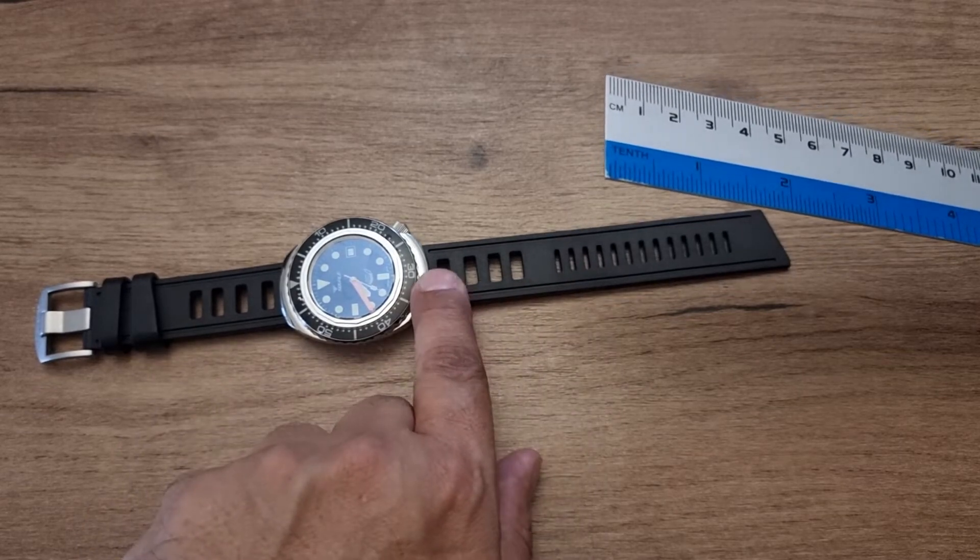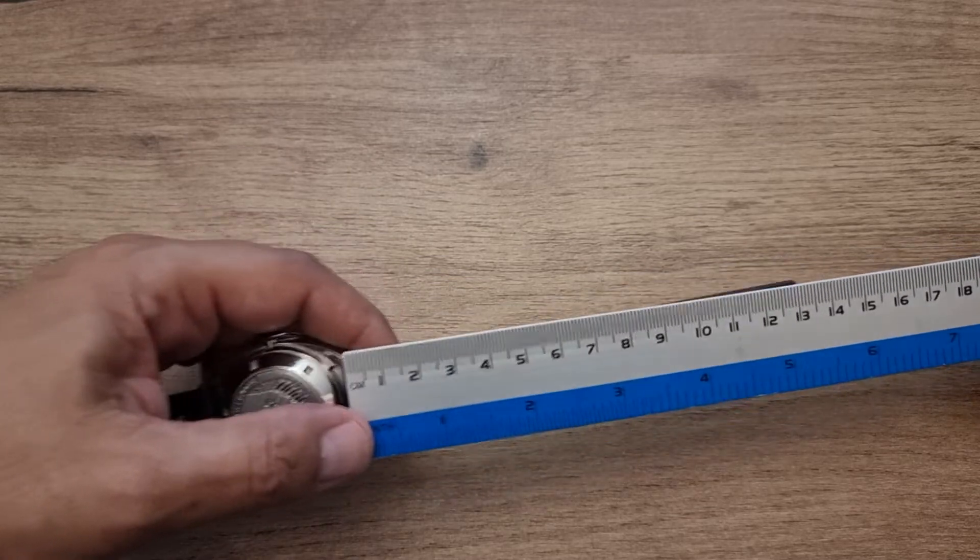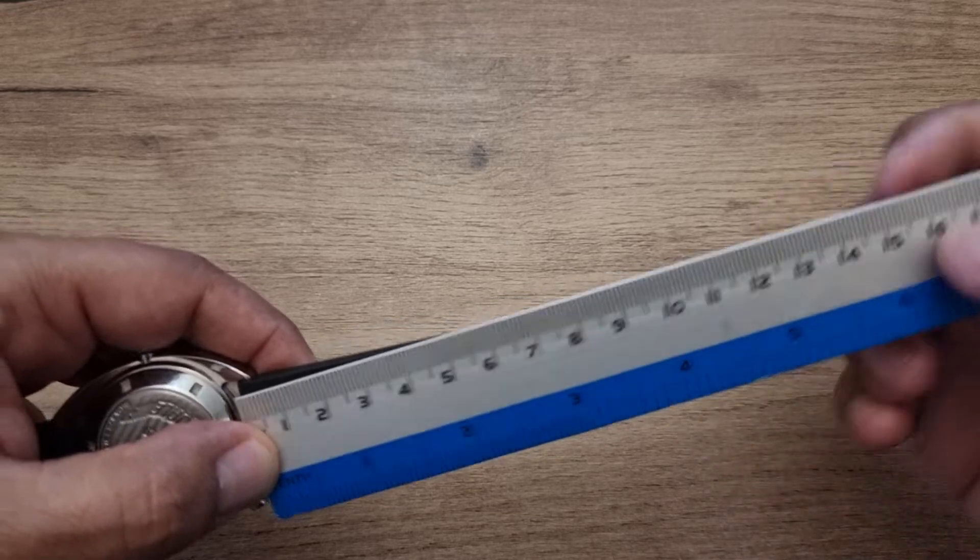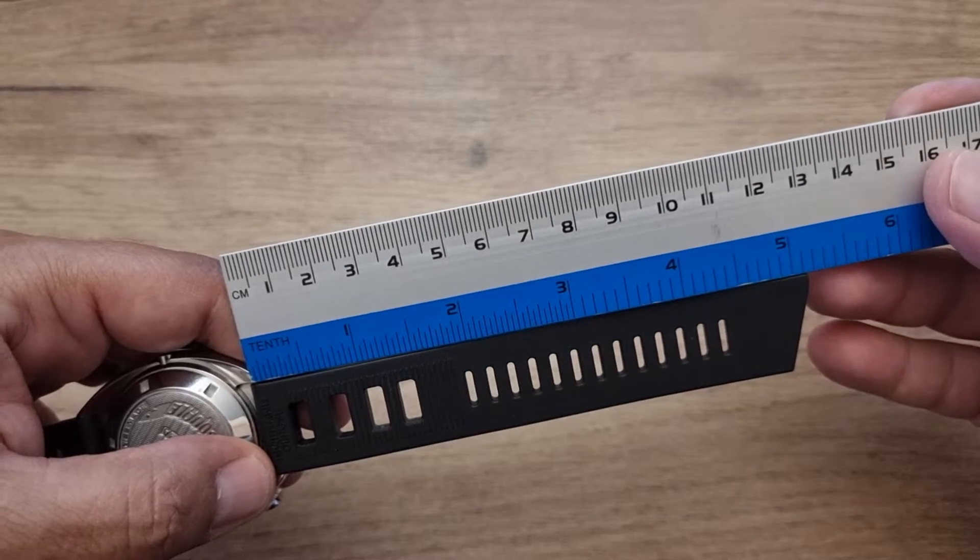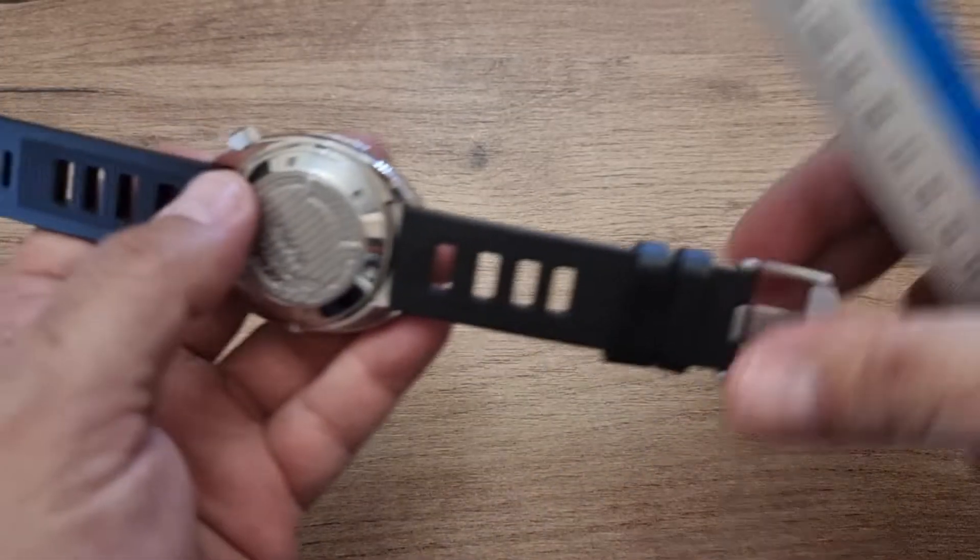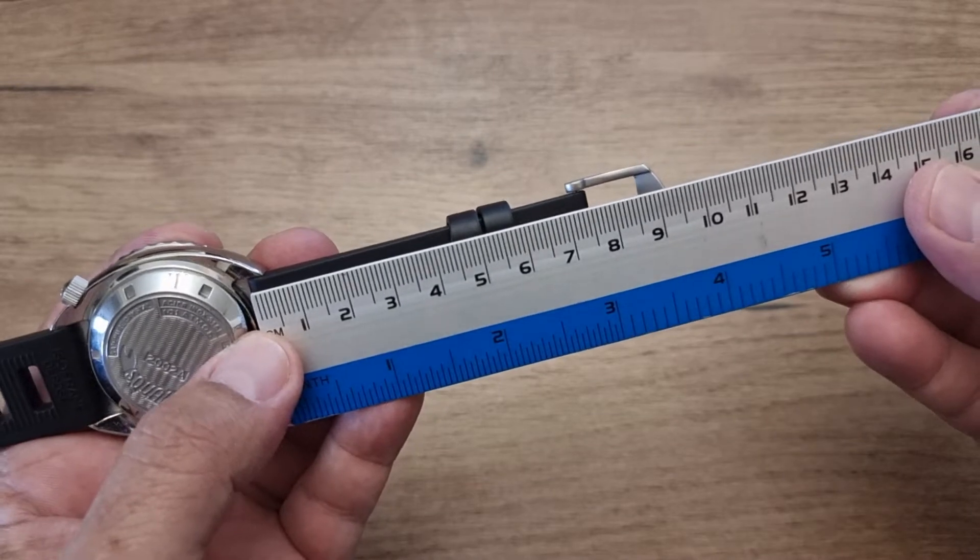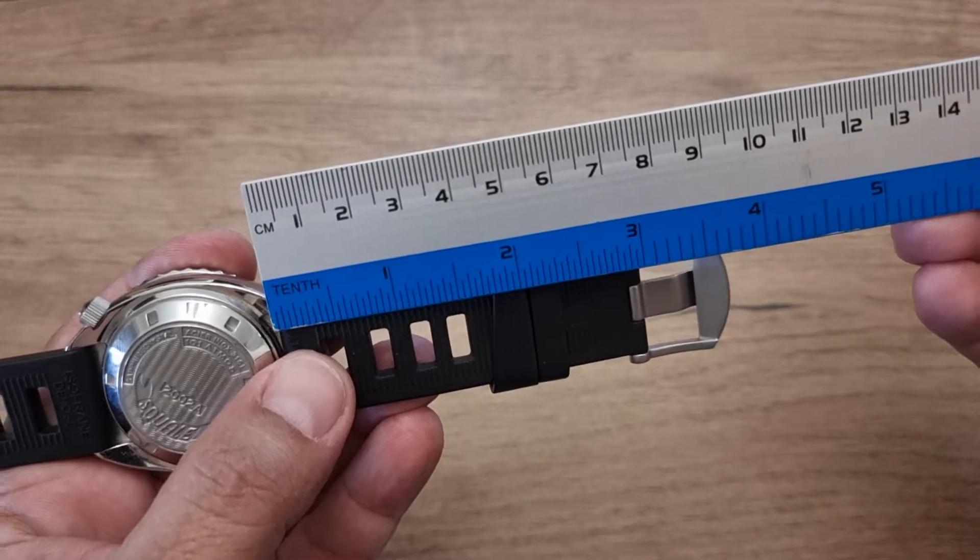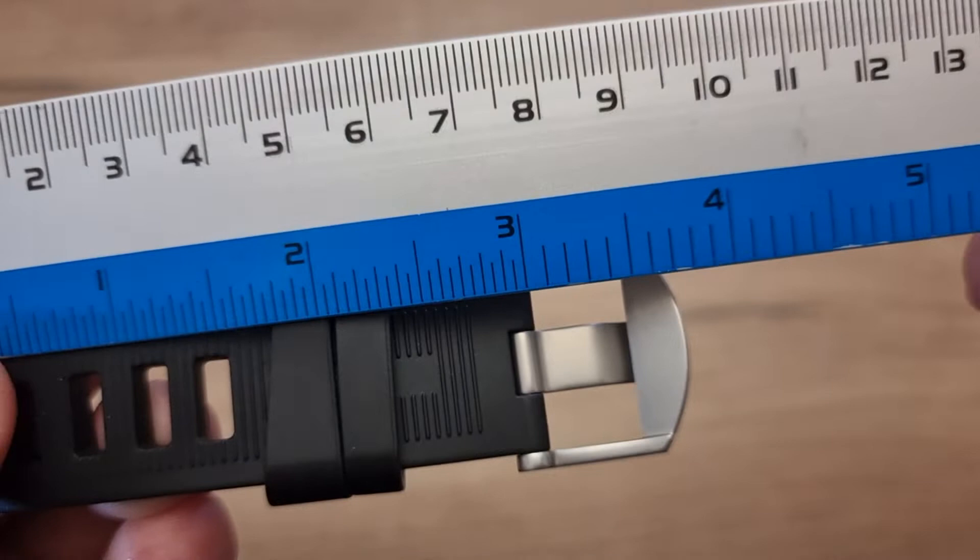The part that goes on the six o'clock of the watch measures 13 centimeters or 5.1 inches. Now the part that goes on the 12 o'clock measures 7.5 centimeters or 3 inches for those of you who are living in the stone age.